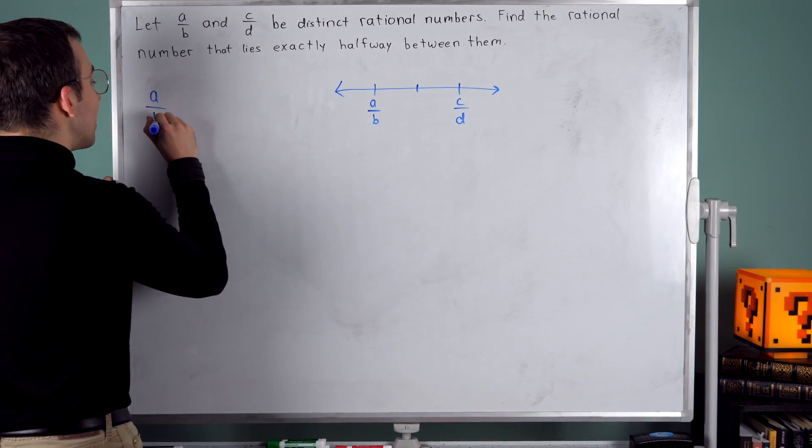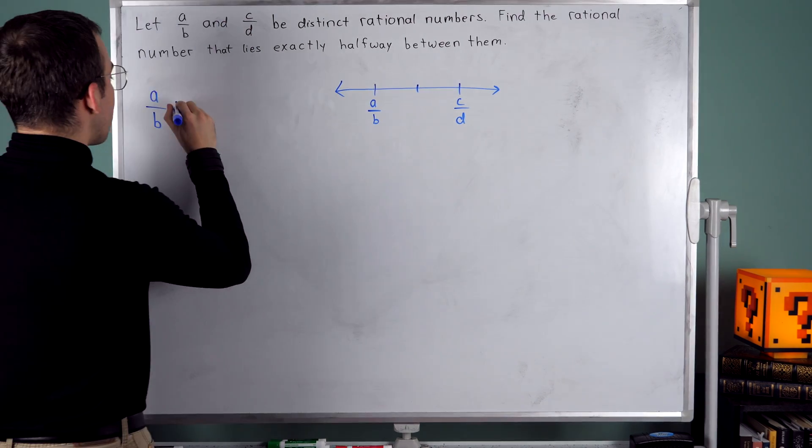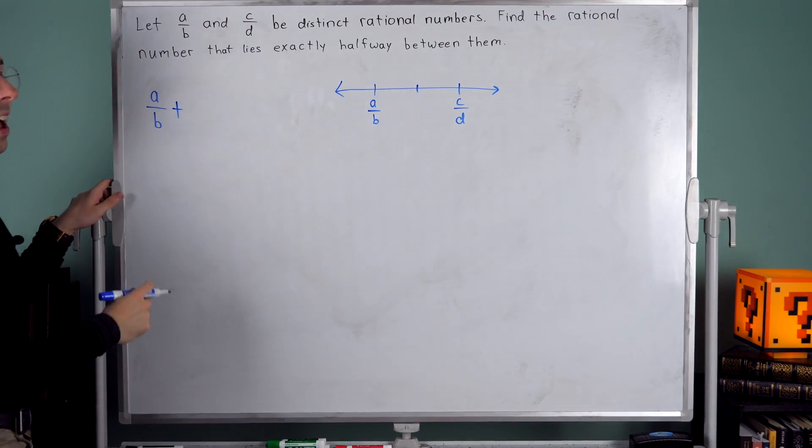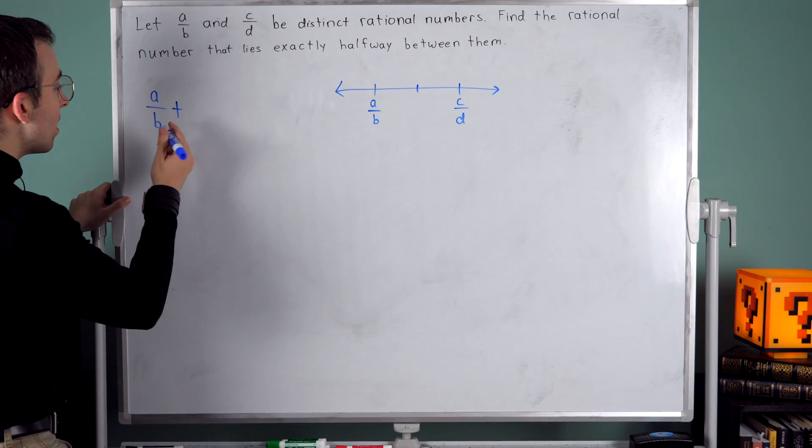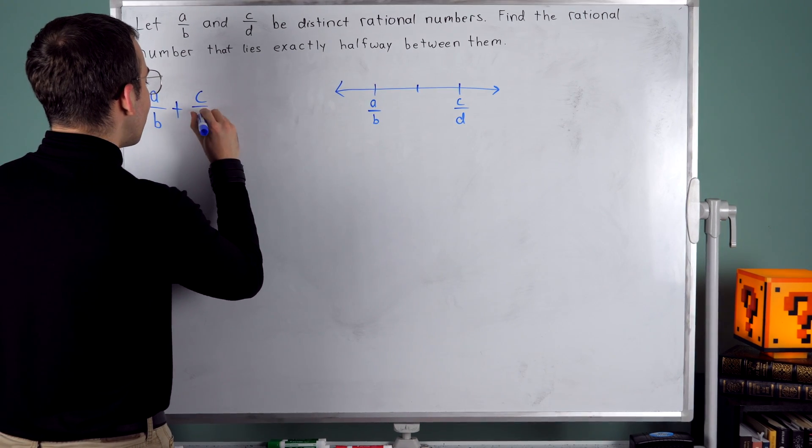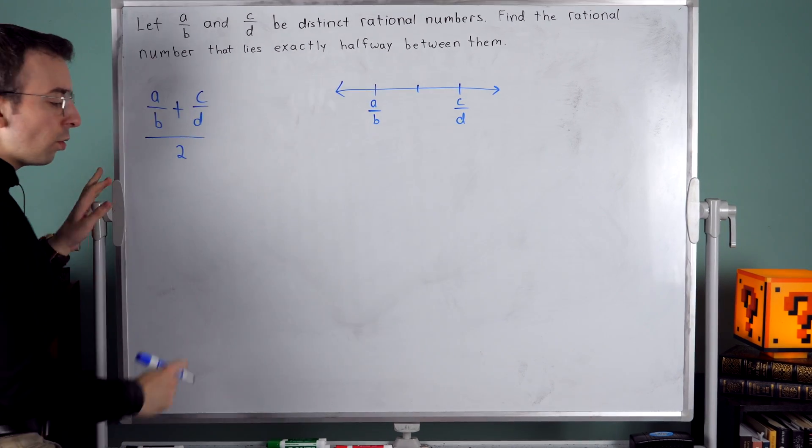You would just say, I've got to find the average of these two numbers. I can find the average of A over B and C over D by adding the two numbers and then dividing by two.